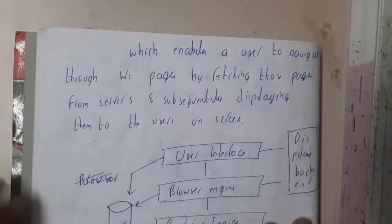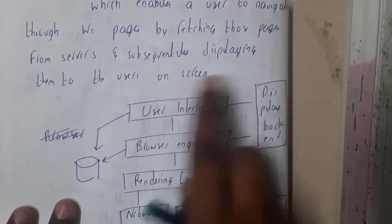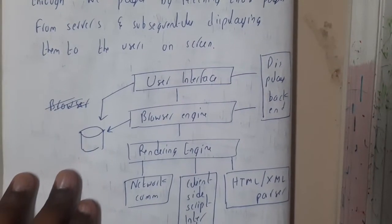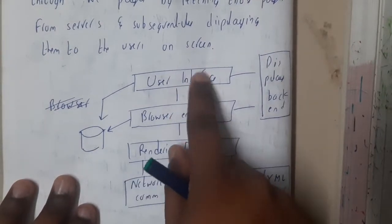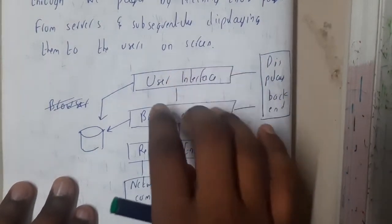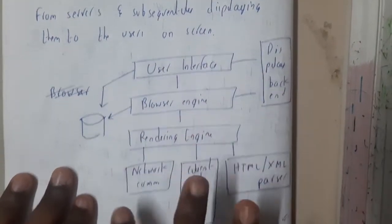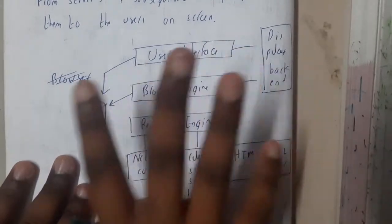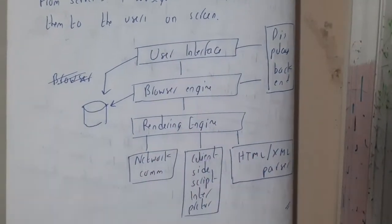This is a simple flow diagram where the client is requesting for the scripts and seeing them on the front end. The browser engine is checking the rendering engine, the data is collected, and it is shown to the user. So that's the basic flow diagram.